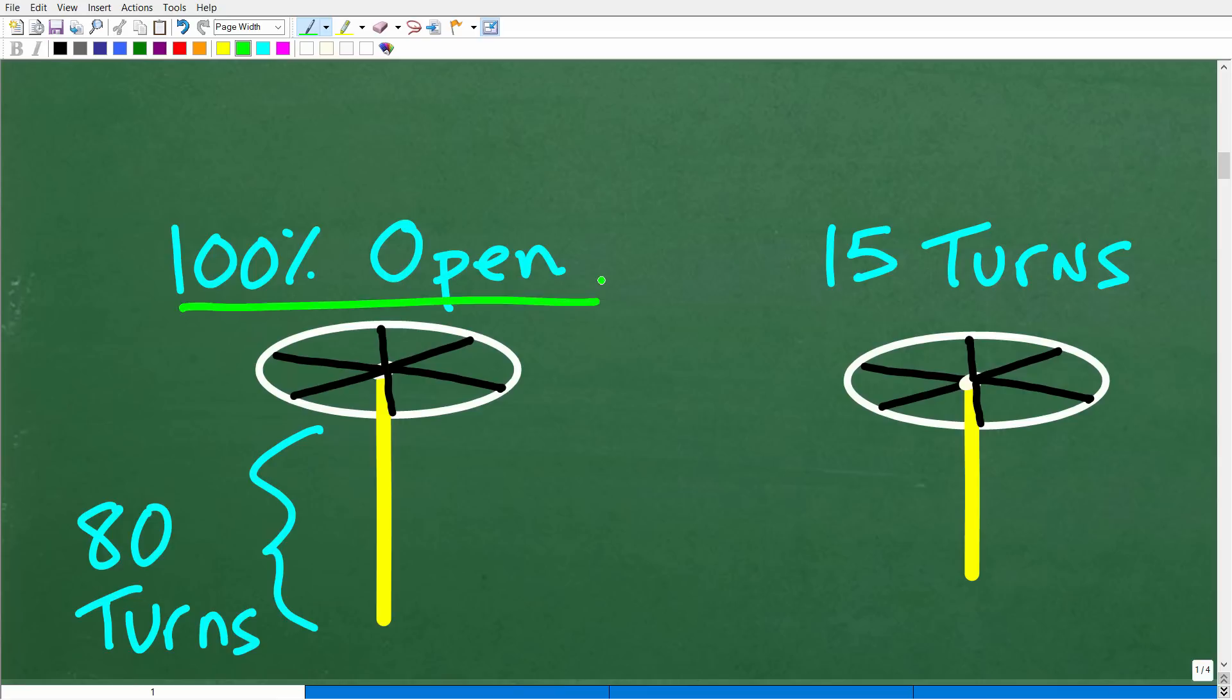Okay, so here is a valve, it's 100% open. And if I want to shut this valve, I got to turn it to the right, right? So hopefully all of you know this little saying, righty-tighty, right? So turn to the right to tighten, tighten the valve, lefty-loosey, righty-tighty, lefty-loosey. But that's not really important. What is important is that if I want to shut this valve 100%, it's going to take 80 turns.